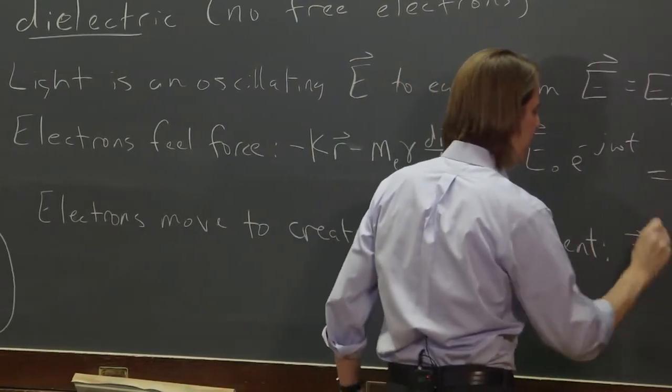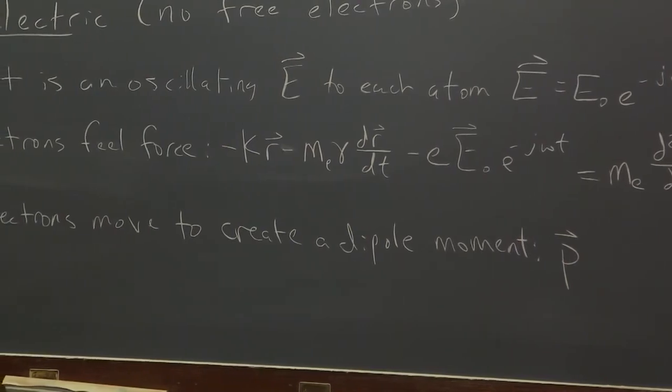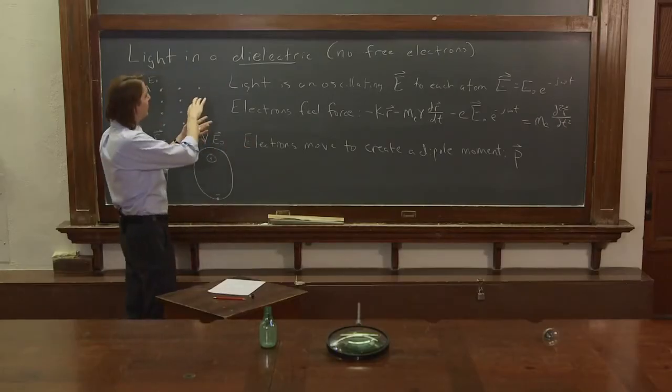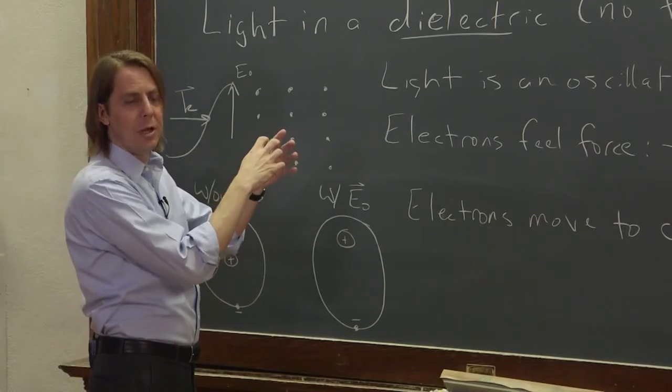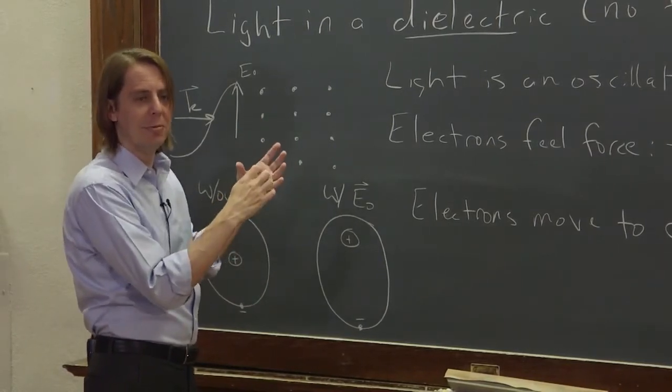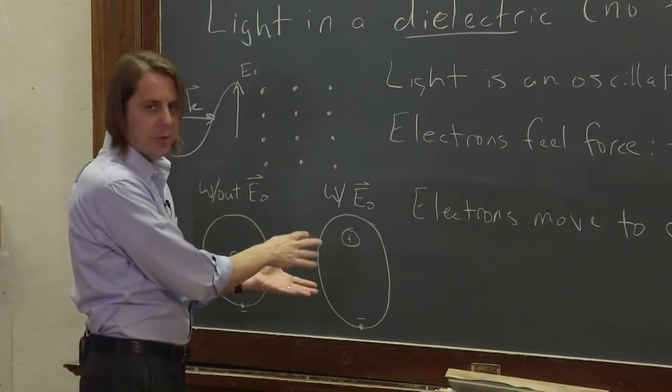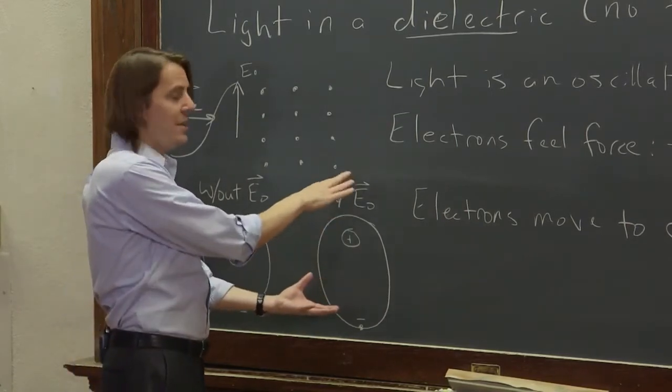And that is labeled P. So a dipole moment is simply a separation of charge. It usually shows up when you have something that is atomic, some molecular structure that's neutral, but your positive charge gets shifted from your negative charge, you create a dipole moment. In this case, we had a symmetric atom, and the dipole moment was created by the E field.